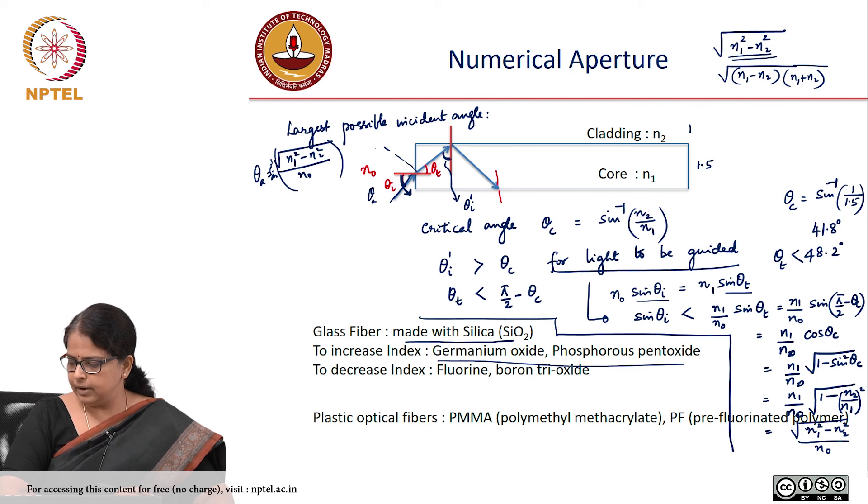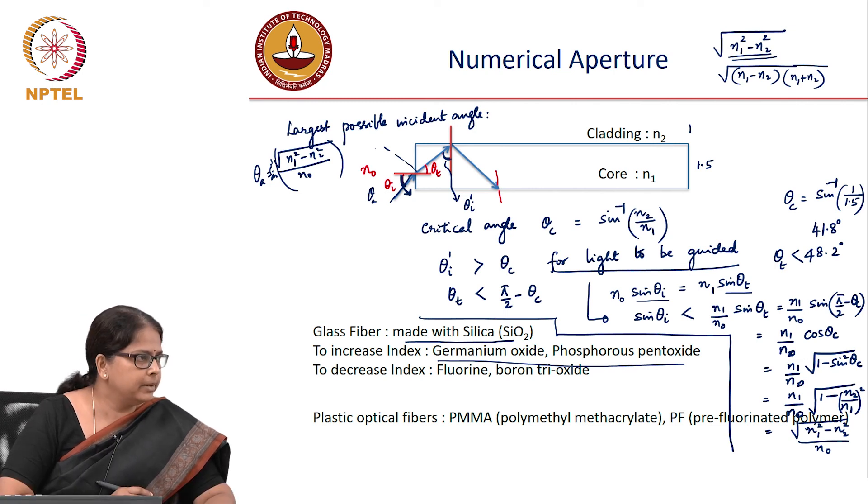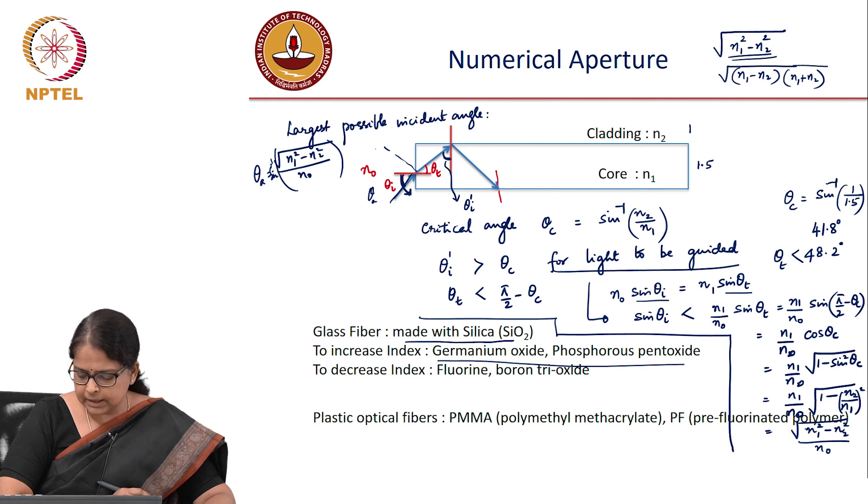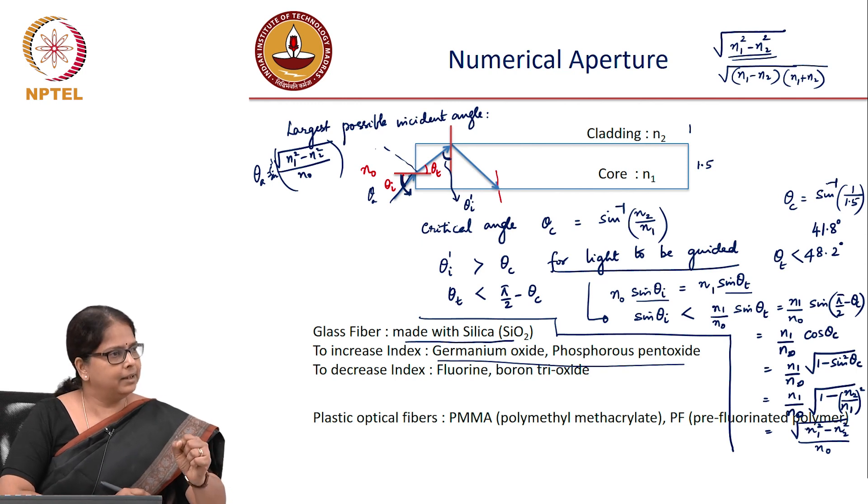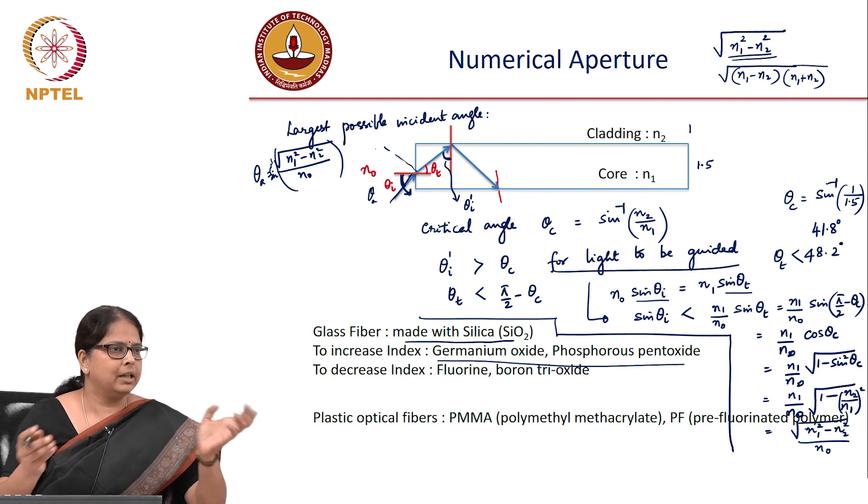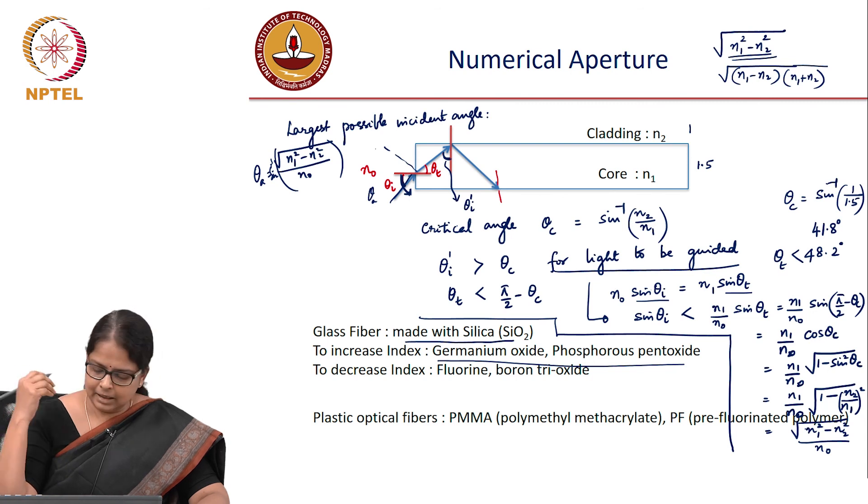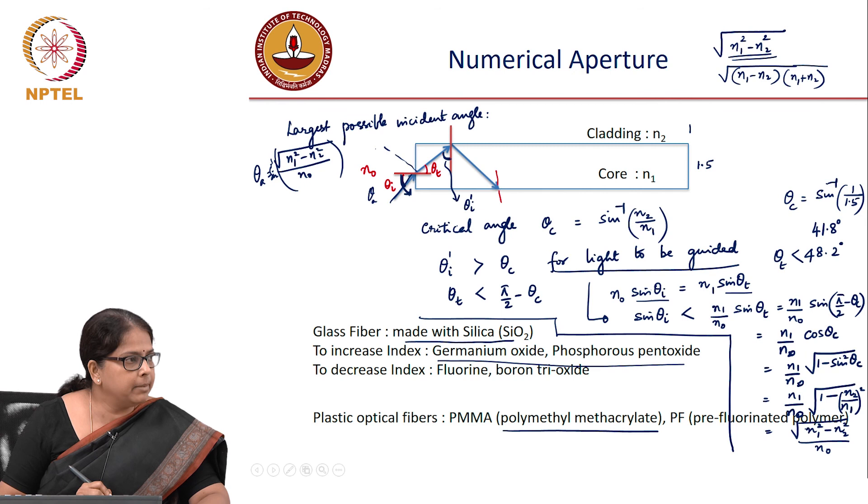You could also have a plastic fiber, like what you used in your lab—a plastic optical fiber. These plastic fibers are much easier to handle. You don't worry about ferrules and connectors. They have large numerical aperture and good light-carrying capacity. They're usually made with polymethyl methacrylate, PMMA.